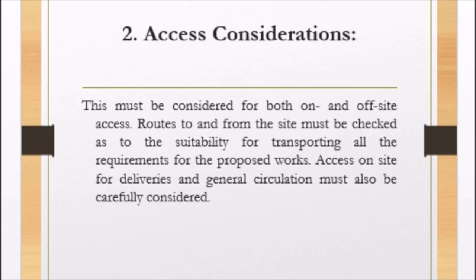Under access considerations, which is the second factor, this must be considered for both on and off-site access. Routes to and from the site must be checked as to their suitability for transporting all the requirements for the proposed work. Access on the site for deliveries and general circulation must also be carefully considered. We need to check proper access for bringing materials in or transporting materials out of the site, and provide enough access for movements on the site.